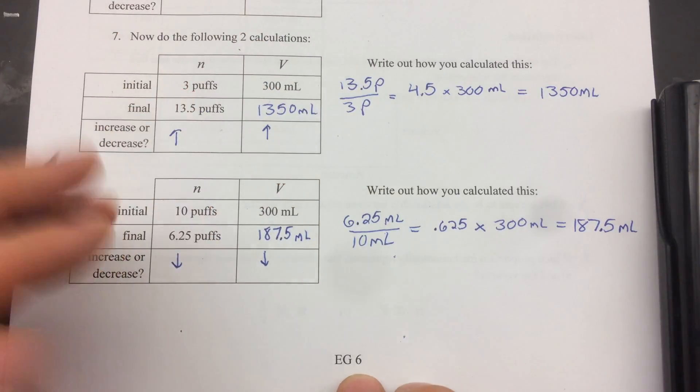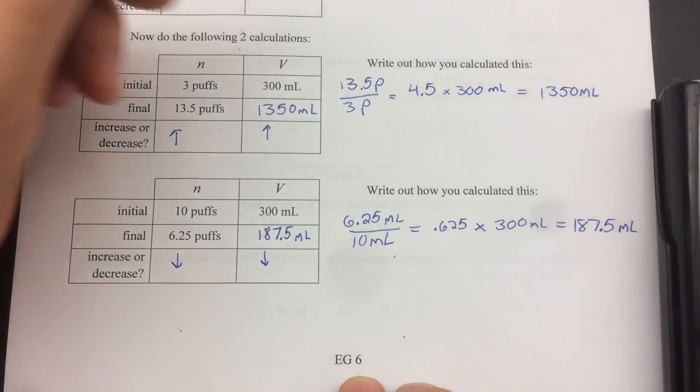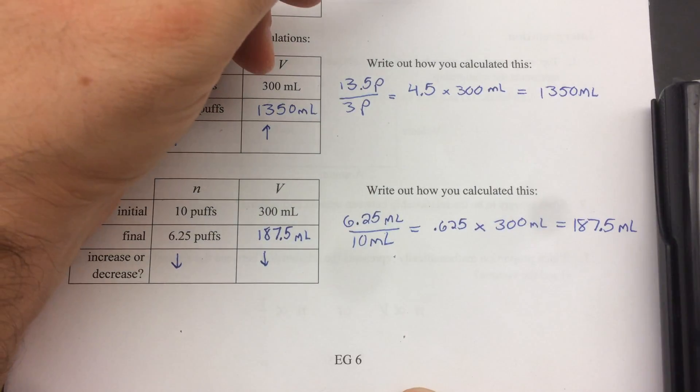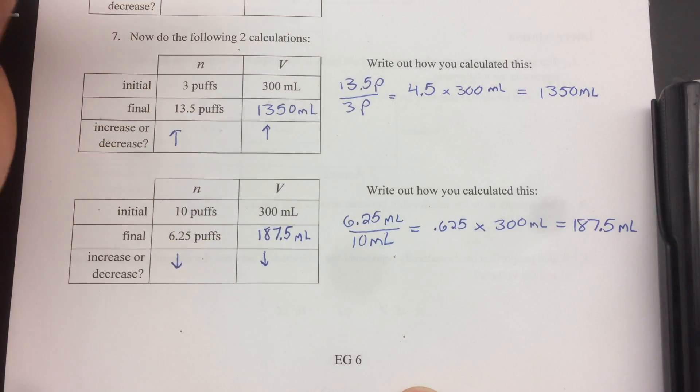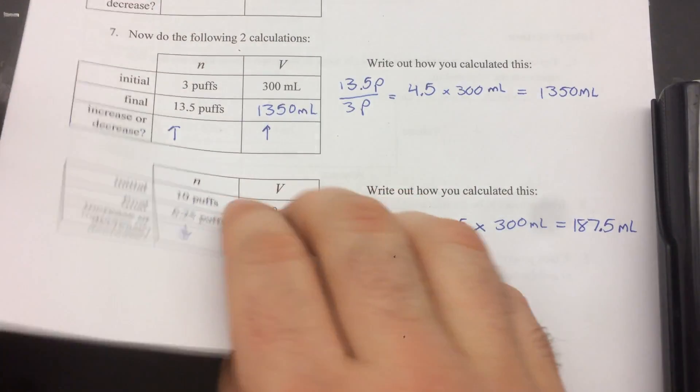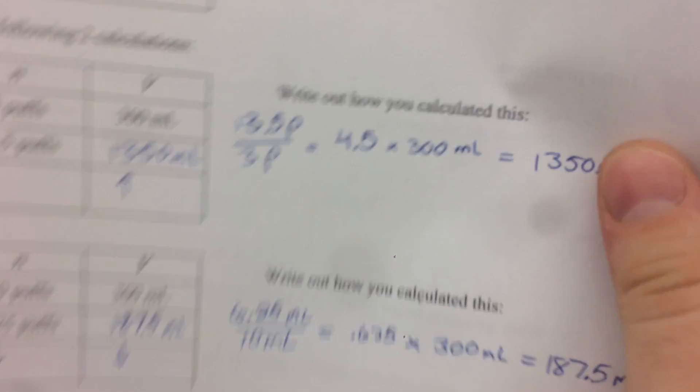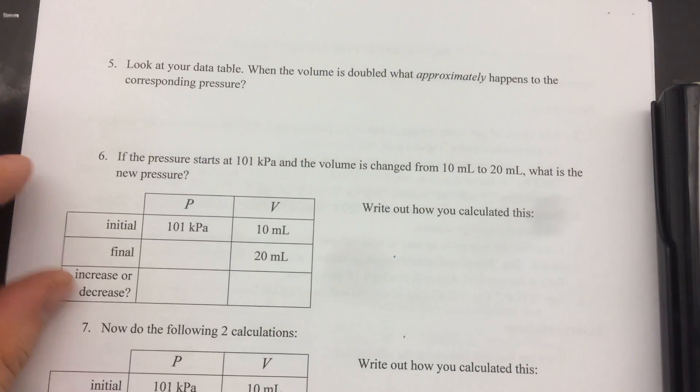So that's for the first experiment. This is a direct relationship. You find the factor and you simply multiply the starting volume by that factor and you get your answer. So if you do another experiment and you get a direct relationship, it's the same process. Okay. So this is one.